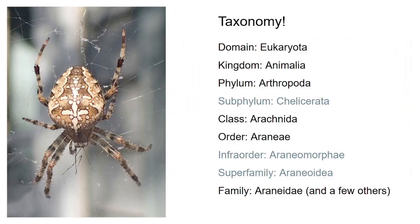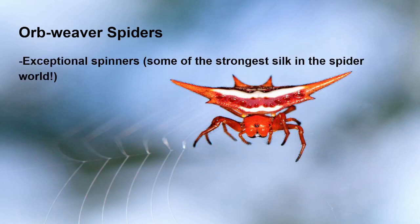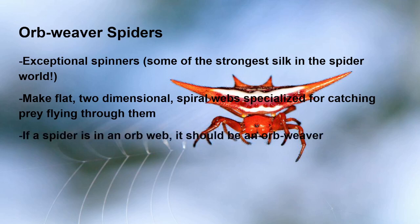Here's a little bit of taxonomy about where orb weavers are found. This isn't super relevant if you're not into it — I just wanted to bring it up to show in each video how each spider is a little bit different than the last. Orb weaver spiders are exceptional spinners. Some of them, if not most of them, actually have some of the strongest spider silk in the world. They make flat, two-dimensional spiral webs specialized for catching prey that flies through them. If a spider is in an orb web, it's basically an orb weaver.